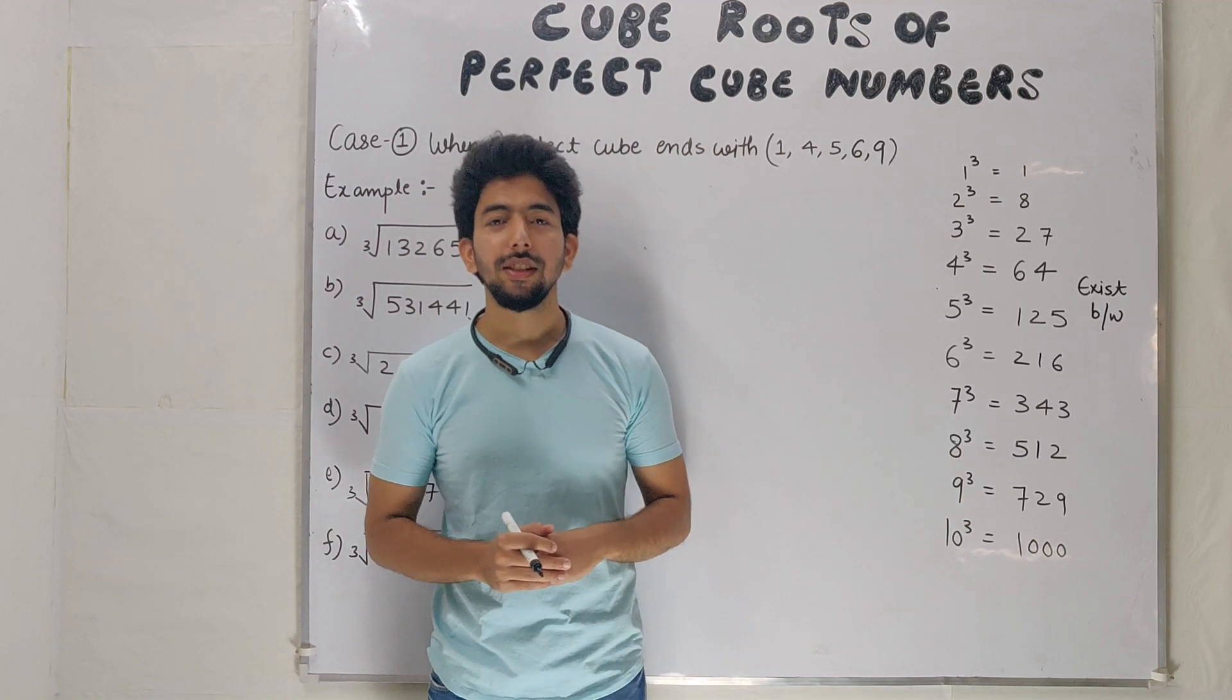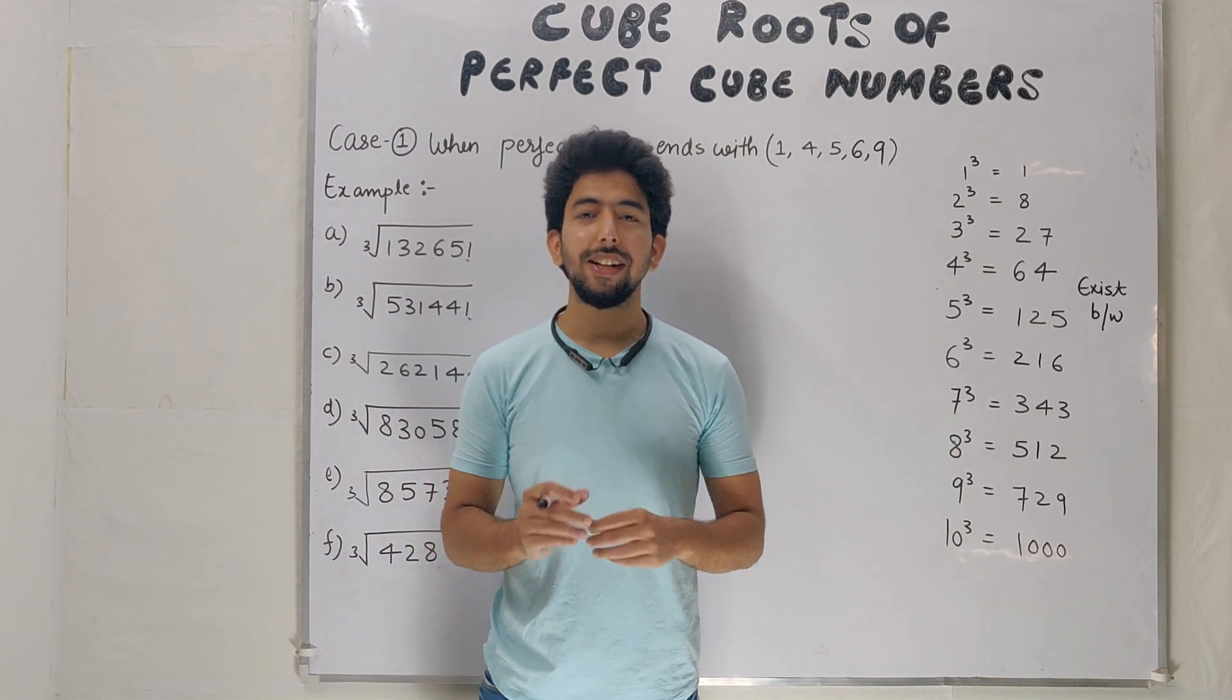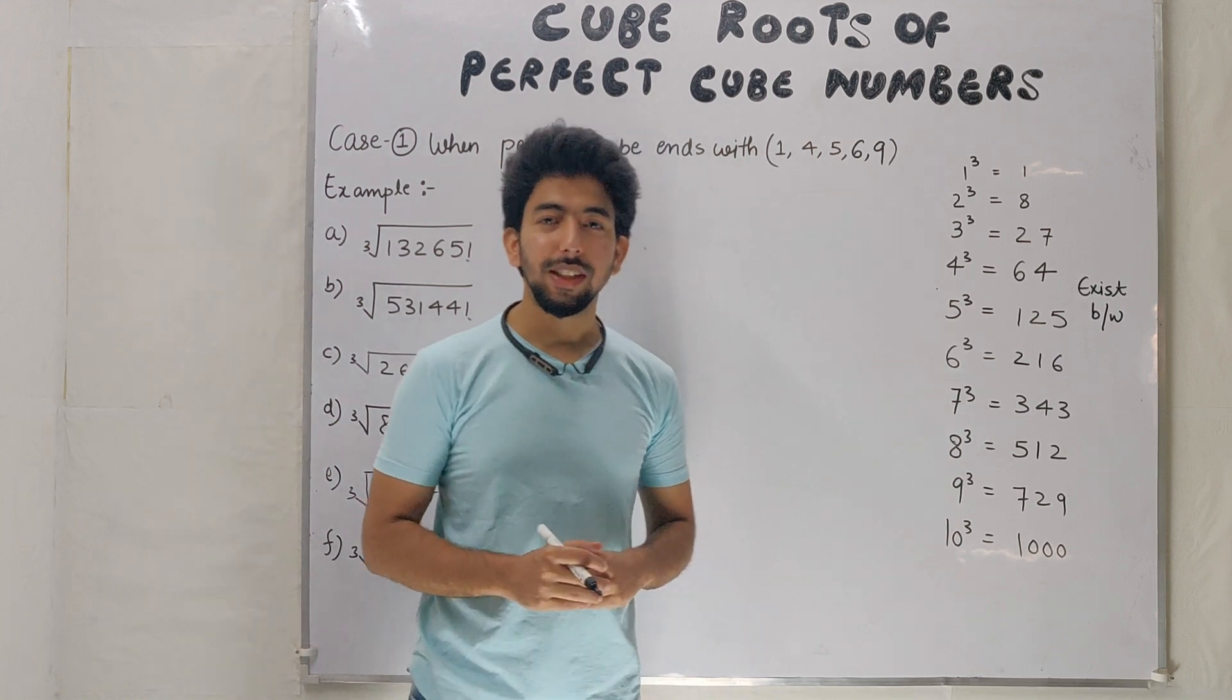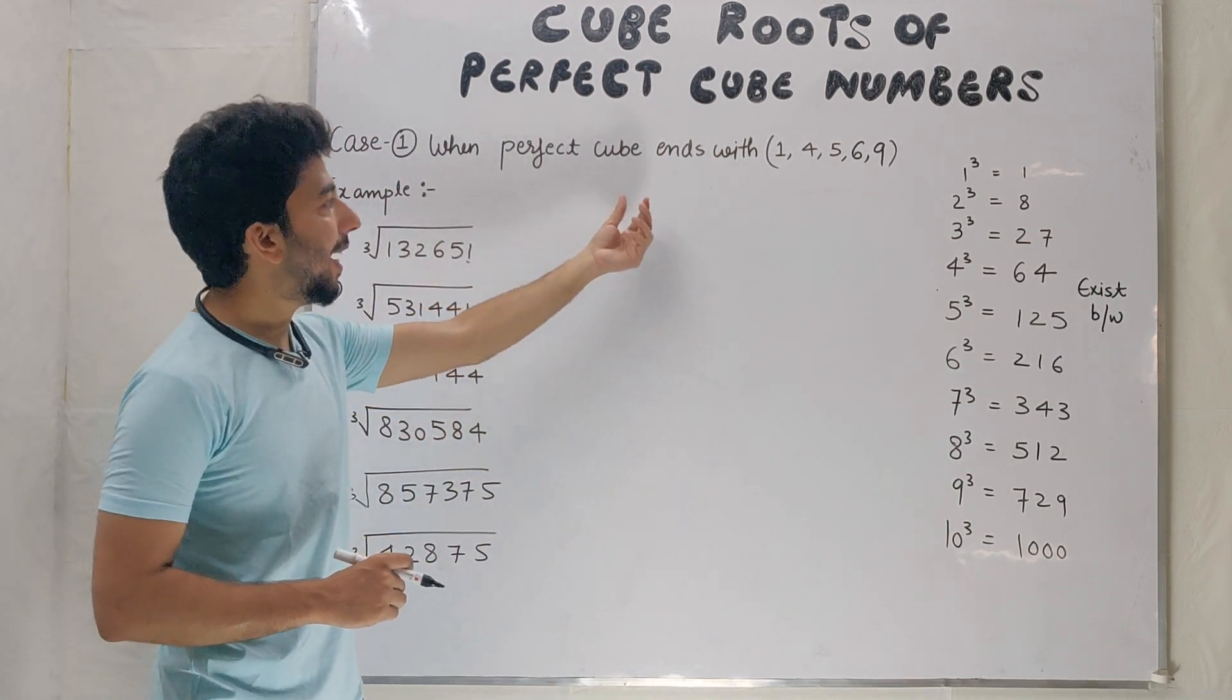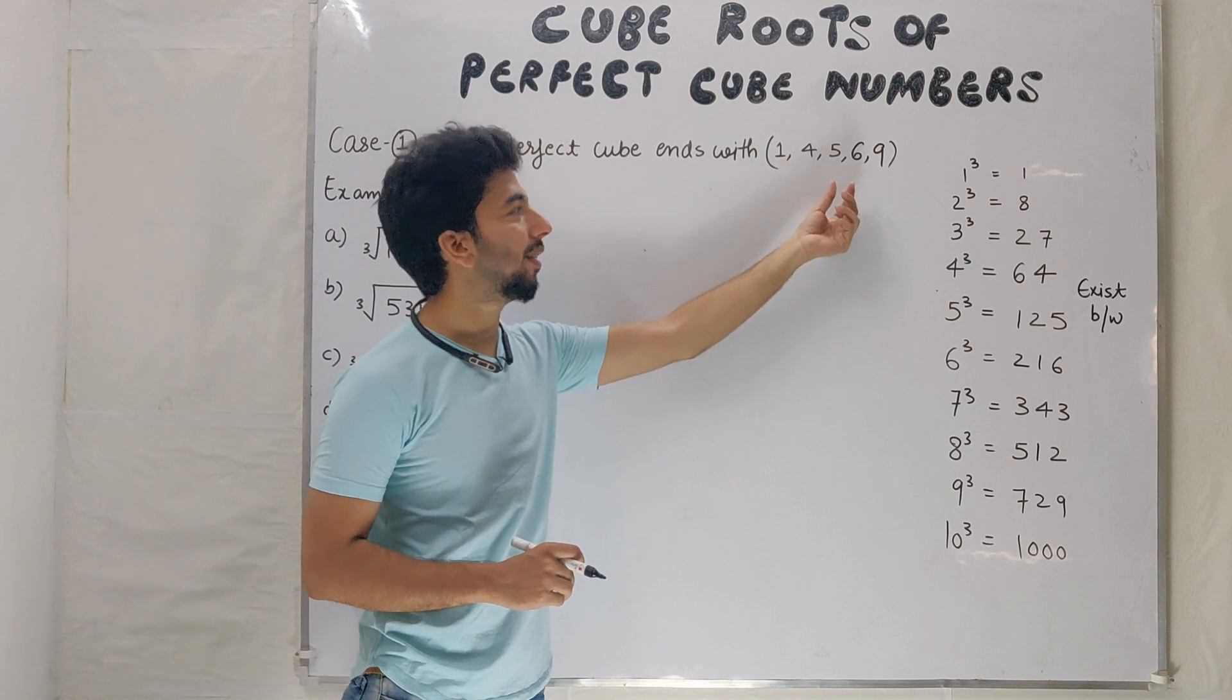Welcome students, in today's class we will learn how to find the cube roots of perfect cube numbers. So let's start with case number 1. When perfect cube ends with 1, 4, 5, 6, or 9.